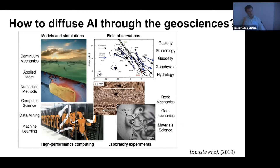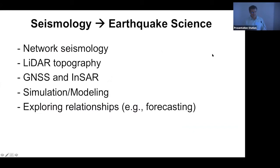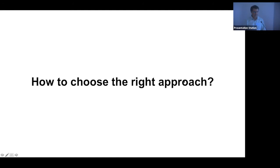One of the issues that's come up is how to broaden the impact of AI, machine learning, and data science throughout the geosciences. As a seismologist who studies earthquakes, my approach is to get others in the earthquake science near-field — looking at LiDAR data, GNSS data, InSAR, or simulation output — motivated by seeing how much of a difference it makes in seismology. But there are no doubt other approaches to broadening the reach of data science.